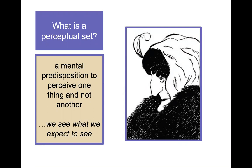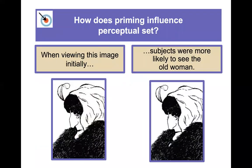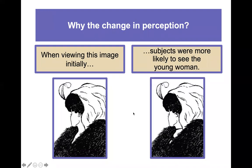From the last module, we talked about the concept of priming. How does priming influence perceptual set? If people are presented with the image on the left first, they are more likely to see an old woman in the picture. However, when people initially viewed the other image, they're more likely to see a young woman. So the initial image primes and helps create a perceptual set for what you're seeing.